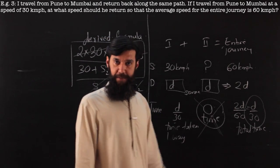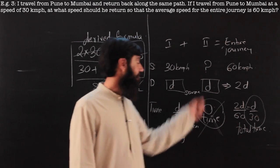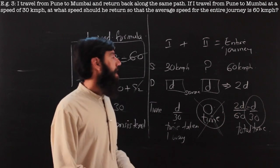What is happening here is the distance has doubled for the entire journey as compared to one way. The speed also has doubled. If distance doubles, speed doubles, the time remains same. That means I have to come back virtually in no time, which is not possible.